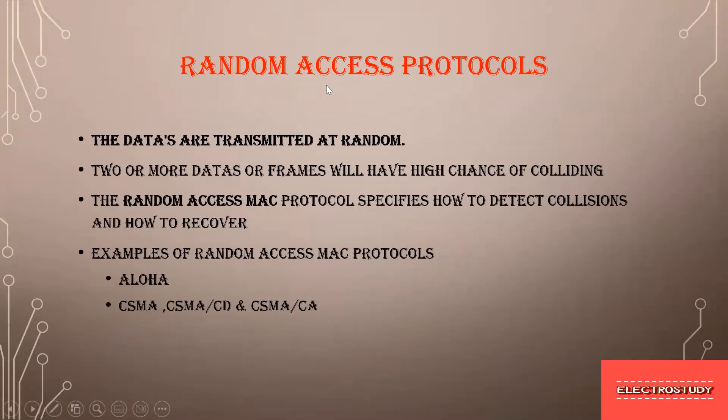Random access protocol. How this has come? In data link layer, we have seen that there are two sub layers - one is data link control and another one is MAC, media access control. For this media access control, there are some protocols that has been specified for the transmission of frames from one end to the other end. This random access protocol has some examples or processes that has been followed to carry out this protocol successfully.